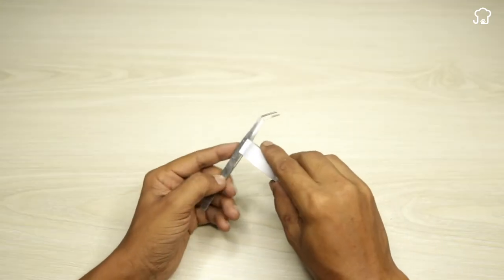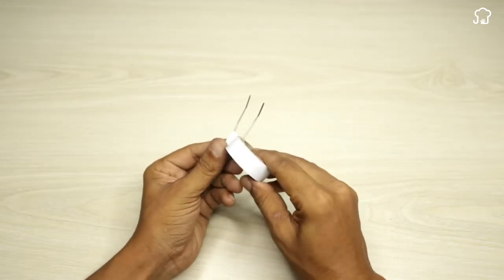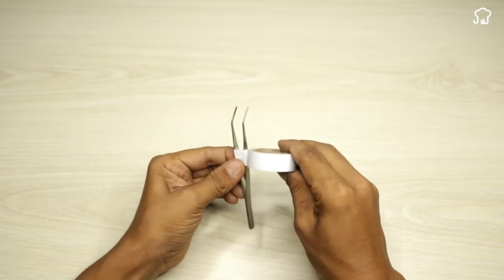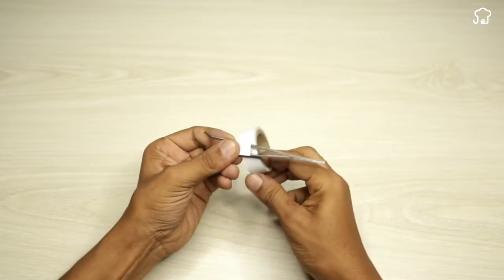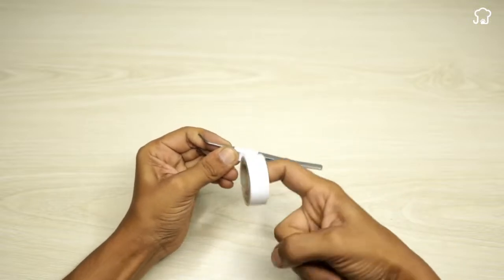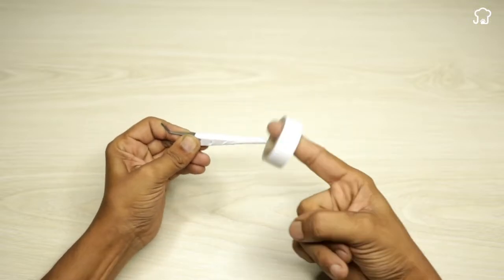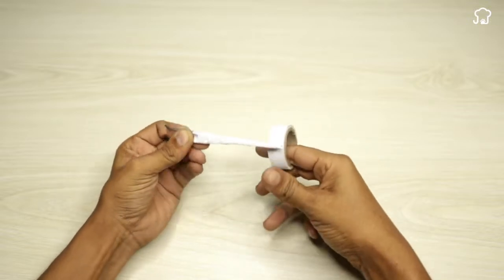The next step is to protect ourselves from possible electric shocks. To do this, we will take some tweezers and wrap them well with insulating tape. This will ensure that there is no direct contact with electricity while we maneuver the bulb.